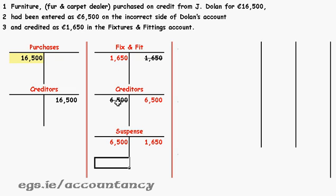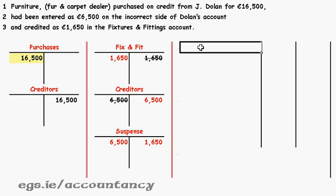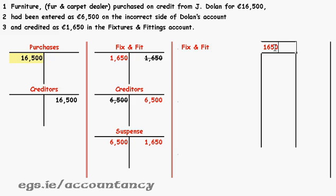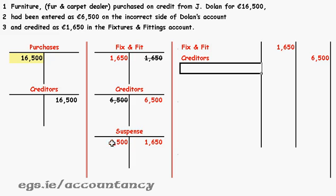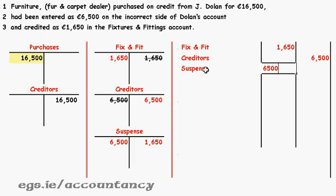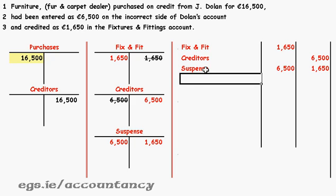At this stage we've got rid of all the wrong entries. What did we do? First we put an entry into fixtures and fittings on the left-hand side: 1,650. Next we put an entry into creditors on the right-hand side: 6,500. And we put two entries into suspense — one on the left, 6,500, and one on the right, 1,650. Now this set of entries has wiped out the mistake and brought us back to a blank ledger.